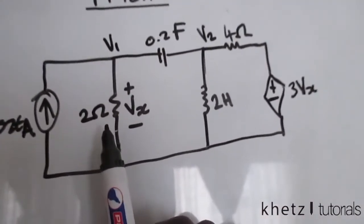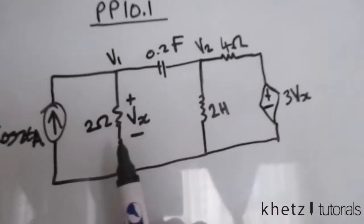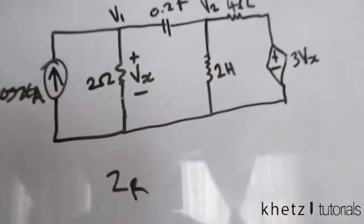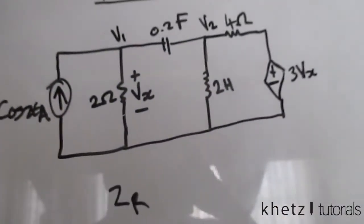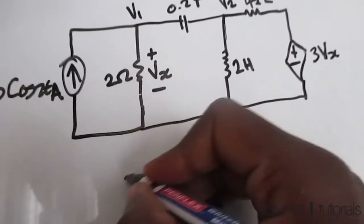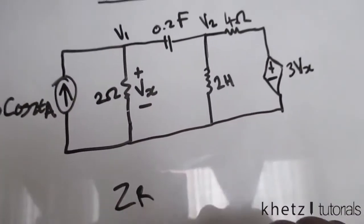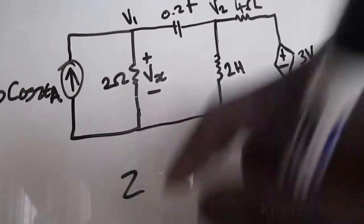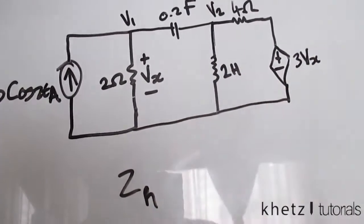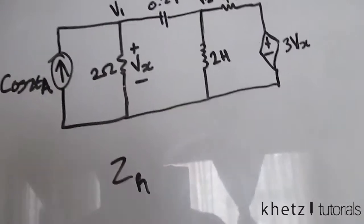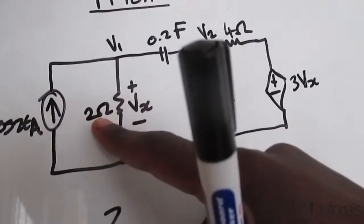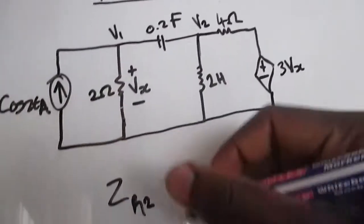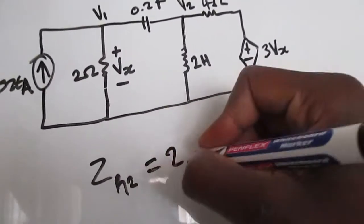To transform a resistor value into its equivalent impedance, you just take its value because it is in the same unit as impedances. So Z_R — using R as a subscript to indicate the component type — Z_R2, for this 2 ohm resistor, is simply 2 ohms.